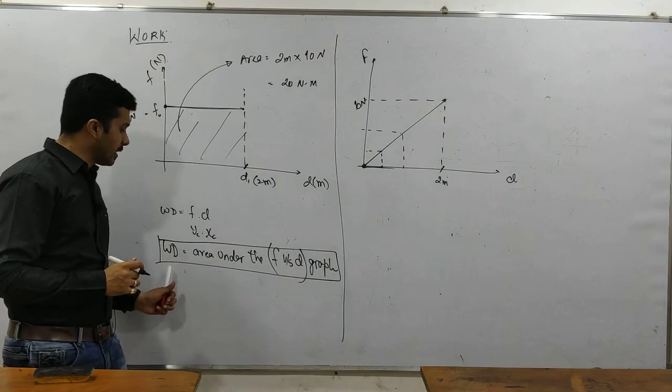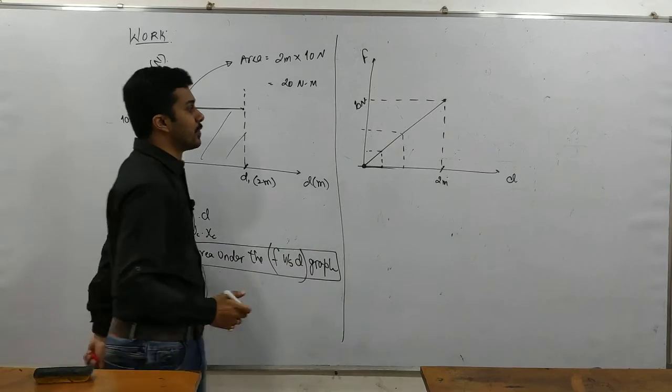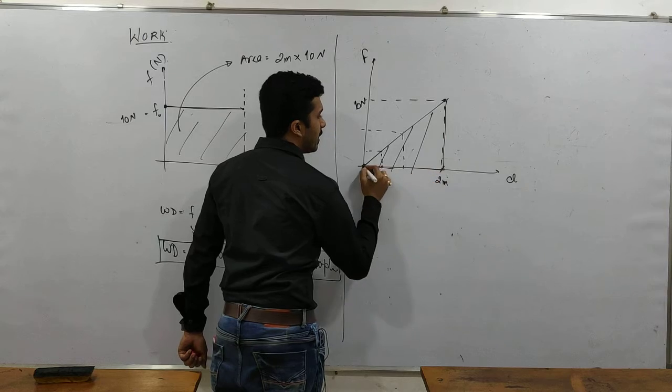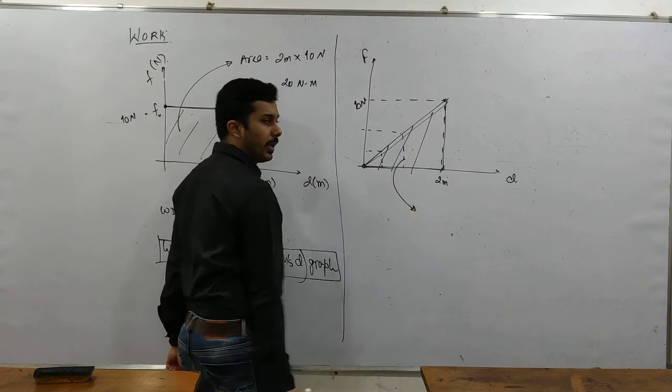We know that work done is nothing but the area under the graph. So this is my graph. Can I find area under the graph? I know it is nothing but a triangle.